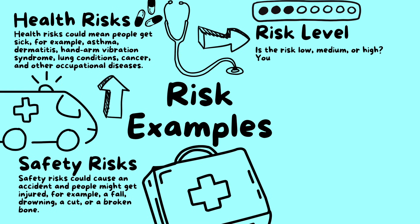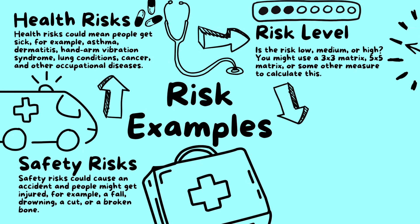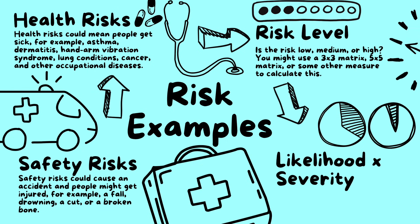Risk level: is the risk low, medium, or high? You might use a 3x3 matrix, 5x5 matrix, or some other measure to calculate this — likelihood multiplied by severity. How likely is it people will be hurt? How severe could the harm be?